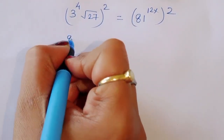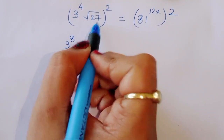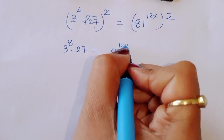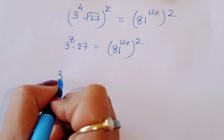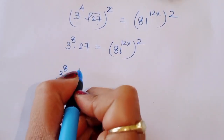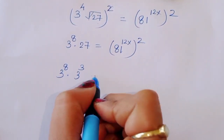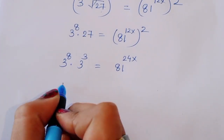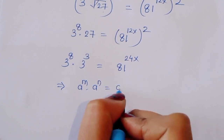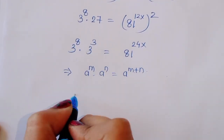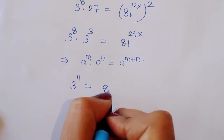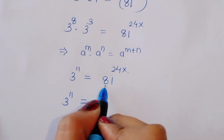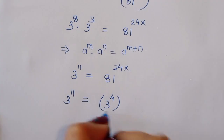Taking square again, 3 power 8 times square root of 27, squared — this will cancel — 27 is equal to 81 raised to 12x squared, that is 81 raised to 24x. We can write 27 as 3 power 3. Using the formula a power m times a power n equals a power m plus n: 3 power 8 plus 3, that is 3 power 11, is equal to 81 raised to 24x.